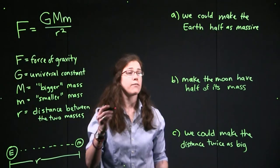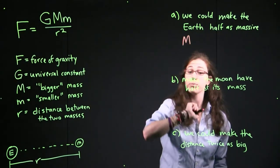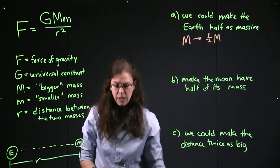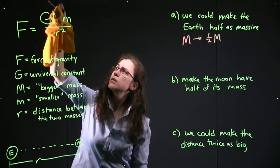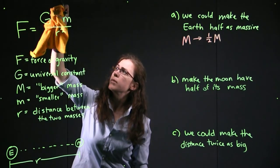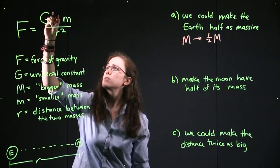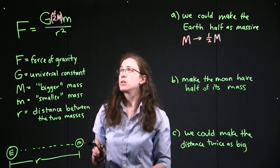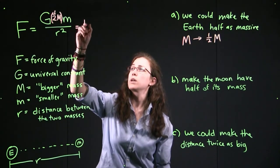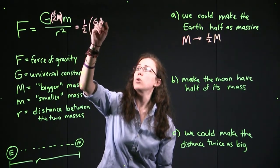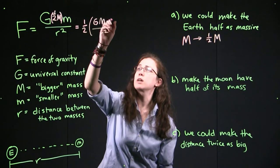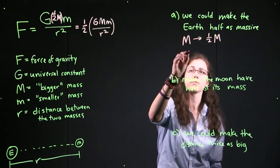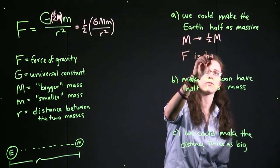So let's see how each one of these works. So if we're making the Earth half as massive, then we're saying, okay, instead of the big M that we had, we're going to say it's only half the mass that it used to be. And so we can take our equation, get rid of that original mass, whatever it was, and replace it with two times one half that big mass. Now when we look, what we get out of that is one half of what we used to have before. So all we've done is made the force half as big as it was. So when we make the Earth half as massive, the force is half as strong.